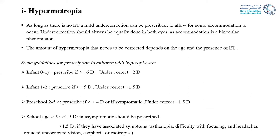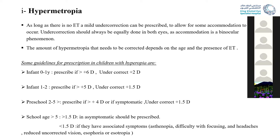In hypermetropia, if there is no esotropia, mild undercorrection can be prescribed to allow accommodation to occur. Undercorrection should always be equal in both eyes, as accommodation is a binocular phenomenon. The amount of hypermetropia to correct depends on the age and presence of esotropia. Guidelines: less than one year — prescribe if hypermetropia is plus six, with undercorrection of plus two; one to two years — prescribe if more than plus five, undercorrect plus 1.5; preschool under five — prescribe if more than plus four, undercorrect plus 1.5; school age — prescribe if more than plus 1.5 in asymptomatic child; symptomatic — prescribe even if less than 1.5, without undercorrection.